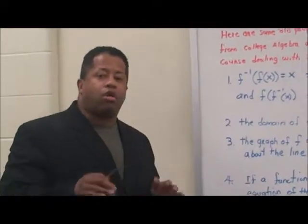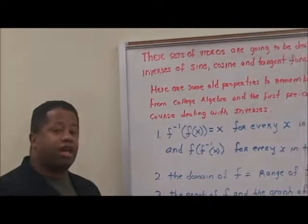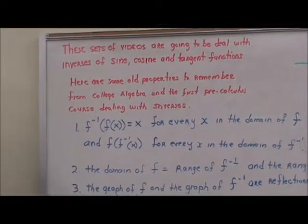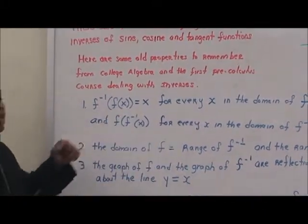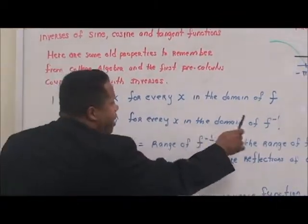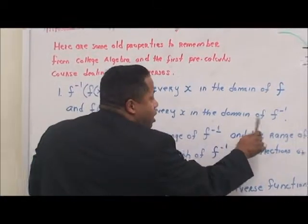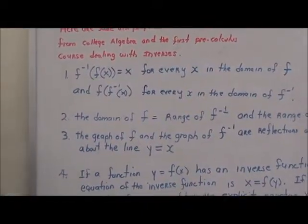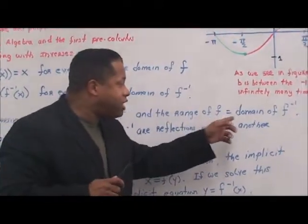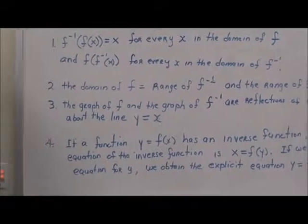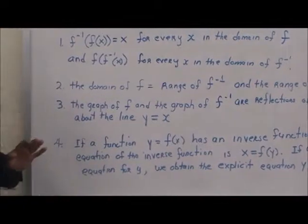Hello and welcome back. We're going to talk about something new — the inverses of sine, cosine, and tangent functions. Here are some old properties to remember from college algebra and pre-calculus dealing with inverses. Property one: f inverse of f of x equals x for every x in the domain of f, and f of f inverse of x equals x for every x in the domain of f inverse. Property two: the domain of f equals the range of f inverse and the range of f equals the domain of f inverse. Property three: the graph of f and the graph of f inverse are reflections of one another about the line y equals x.